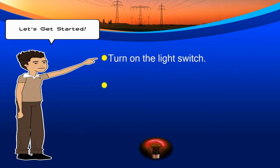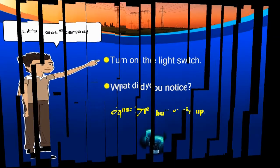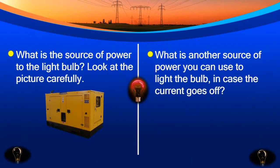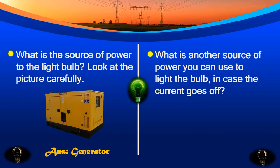Turn on the light switch. What did you notice? The bulb lights up. Very good. What is the source of power to the light bulb? Look at the picture carefully. It's a generator. You are correct.